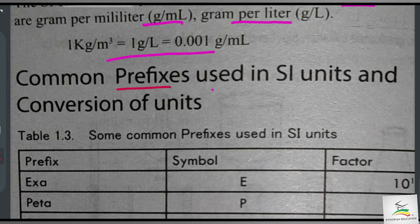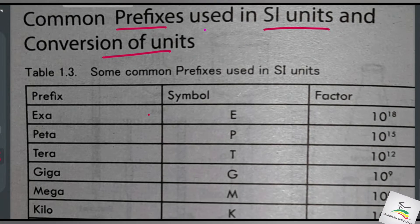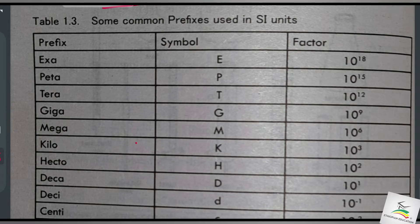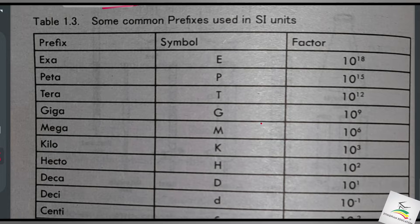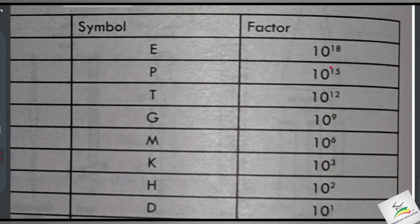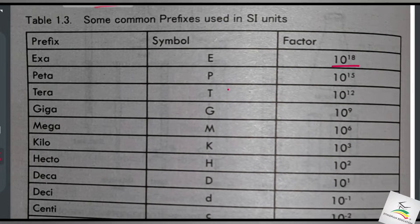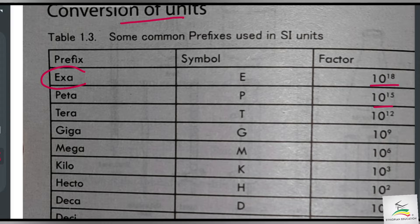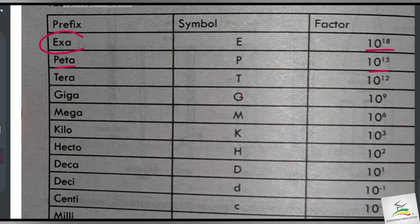Common prefixes used in units and conversion of units. Looking at prefixes: exa is in the power of 18, peta is in the power of 15, tera is in the power of 12.